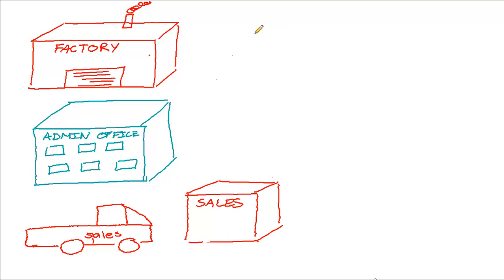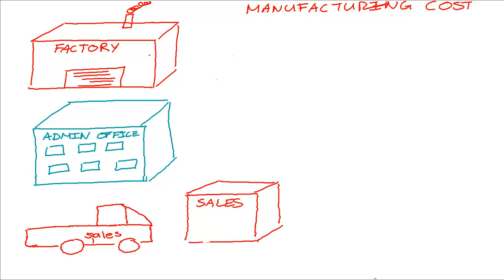When looking at the costs for a manufacturing entity, it is important that we split our costs between the three different departments. The costs related to the factory will be known as manufacturing costs — these are all the costs related to making the product. You ask yourself: did this cost in any way relate to making my finished product? If yes, it's a manufacturing cost. Let's just assume we're making tables here.